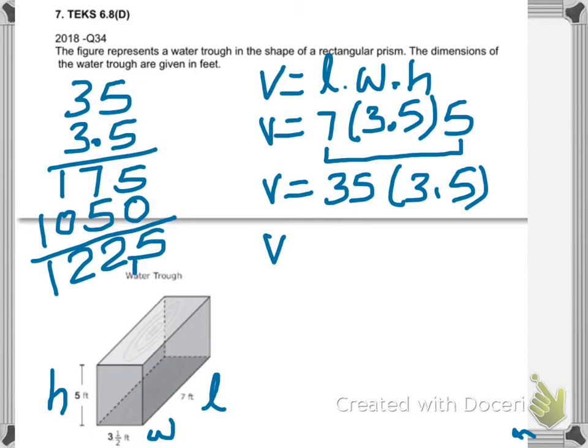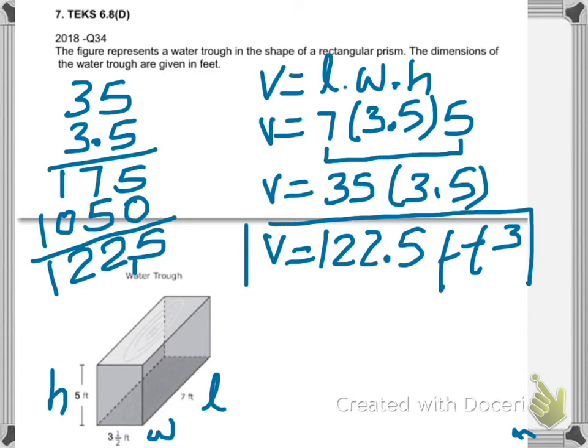We got one hundred twenty-two point five. At least we knew it was less than one sixty — estimation is a good skill to have in mathematics. The answer is one hundred twenty-two point five cubic feet.